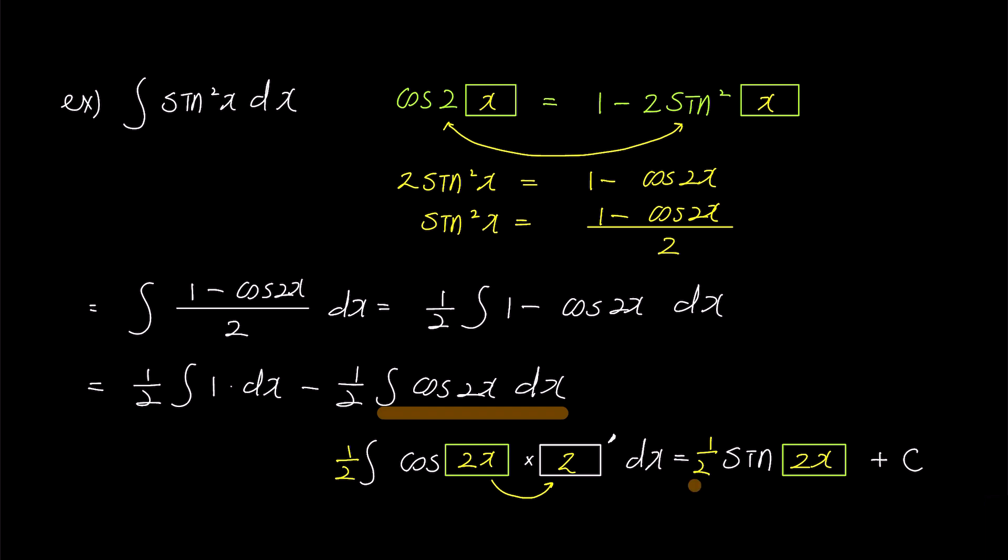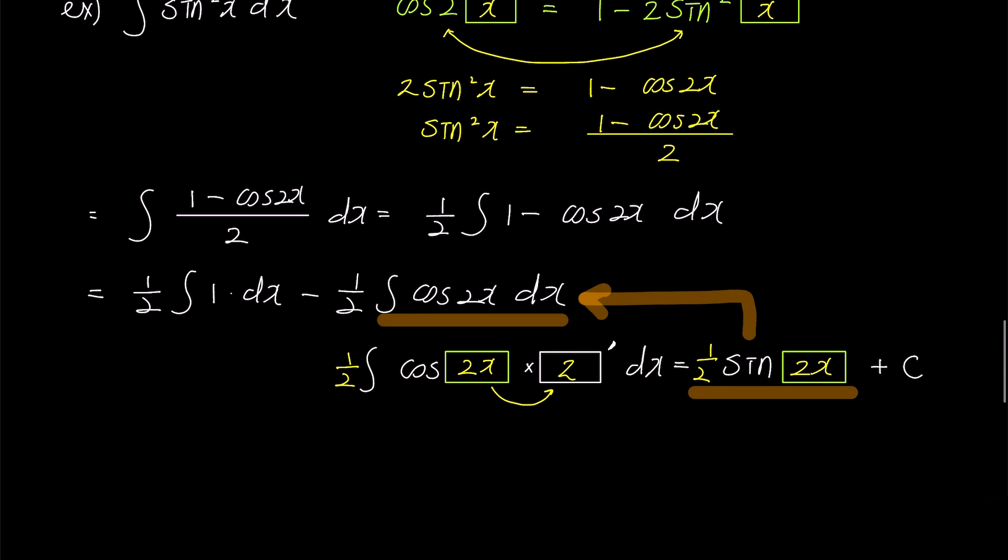Now let's substitute the obtained result of integrating cosine 2x into the previous problem. The integral becomes half x minus half times half sine 2x plus c. The integration constant c is arbitrary, so we only add it once at the end. Simplifying the expression, we get half x minus quarter times sine 2x plus c.